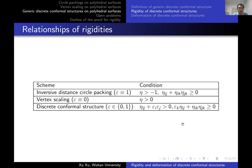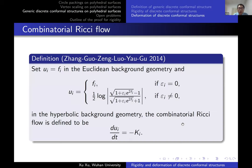We can also introduce the combinatorial Ricci flow for such generic discrete conformal structures on polyhedral surfaces, as introduced by Zhang, Guo, Zheng, Luo, and Gu. For Euclidean background geometry, we set u_i = F_i; for hyperbolic background geometry, we reparametrize F_i as u_i. We can also define a combinatorial Calabi flow, but the results are not as strong. The combinatorial Ricci flow may develop singularities, so we want to extend it.